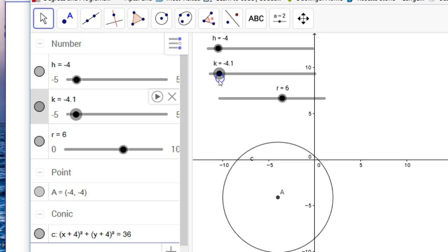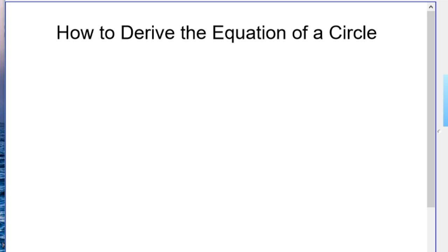And so inside the equation, they should both be positive. Yep, x plus 4 squared, y plus 4 squared equals 36. So that's the equation of a circle. Well, how can we prove that that's the equation of a circle?